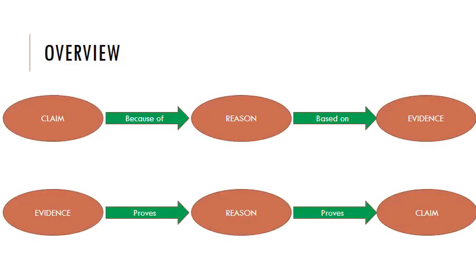To map this out visually: you have your claim — the thing you're trying to prove — and you're making that claim because of a series of reasons. And those reasons are based on concrete evidence or facts. That evidence proves a principle or concept, it proves a certain reason, it demonstrates that a certain situation is the case, and that reason is what proves or supports your overall claim.